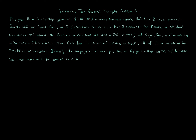So we have Herb Partnership. In the tax world, we have different symbols to suggest different types of entities. A partnership is represented by a triangle, so we're going to make Herb a triangle. Herb Partnership is owned by two equal partners: Savory LLC and Sweet Corp, an S corporation. LLCs are taxed as partnerships unless specified otherwise.